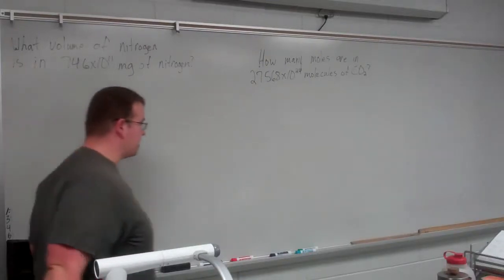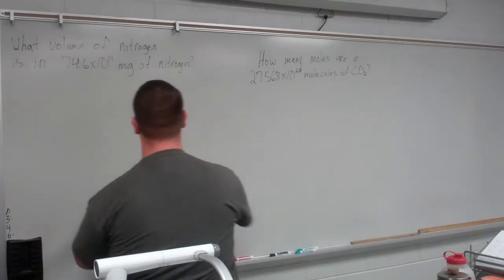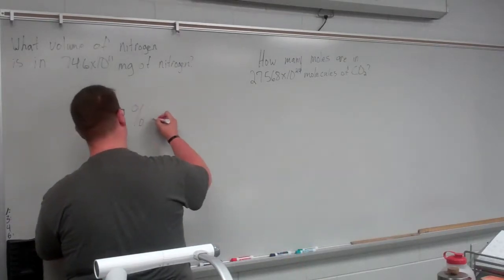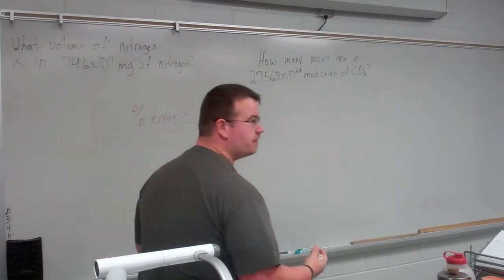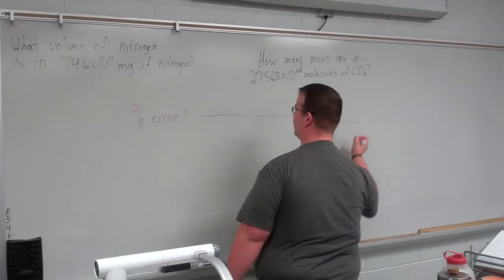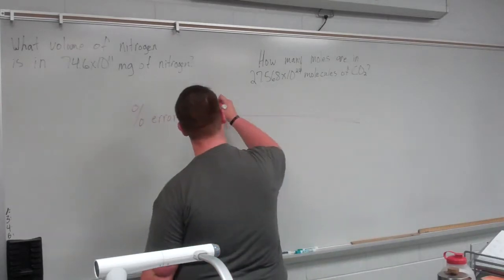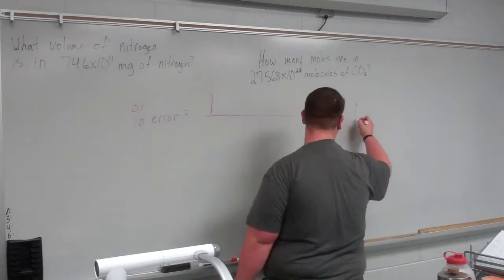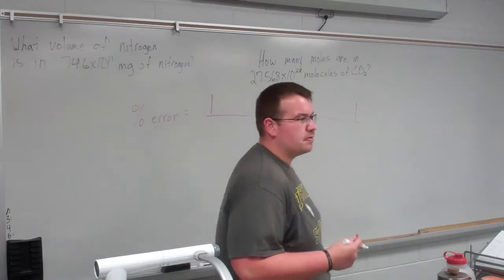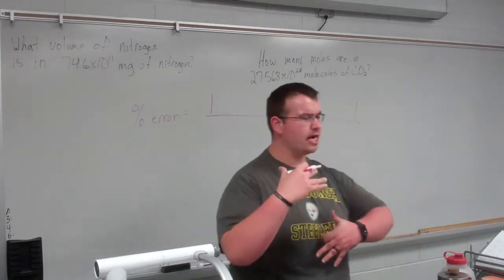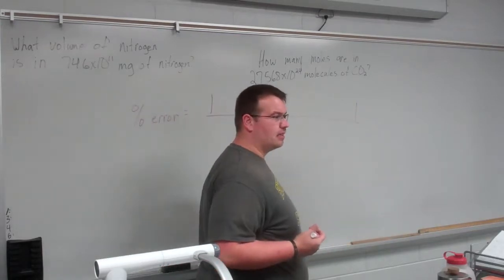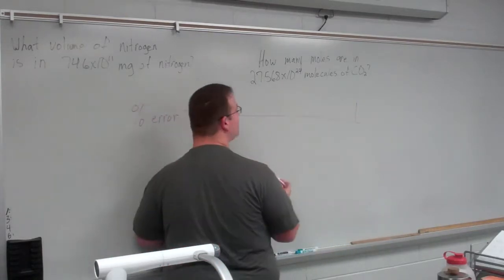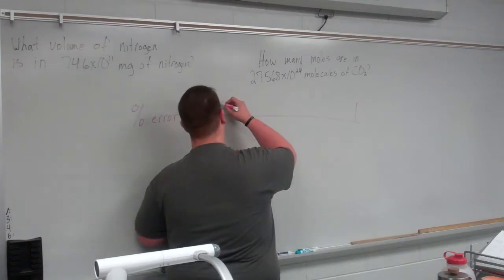All right, so when you're trying to find percent error, this is literally it. This is the simplistic way of doing it. You're going to have some big, huge fraction. On the top of this fraction, it's going to be an absolute value. The reason we do this is because your last number can be a little greater, a little less. This is how I like to define it. The number you should get, or the approximate value, I'm going to say number you should get.